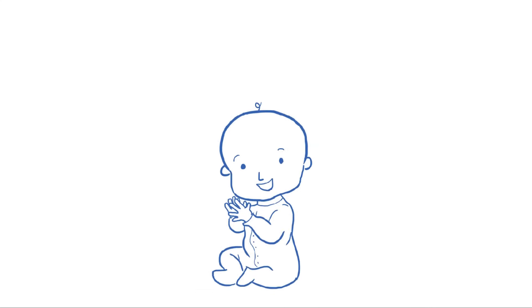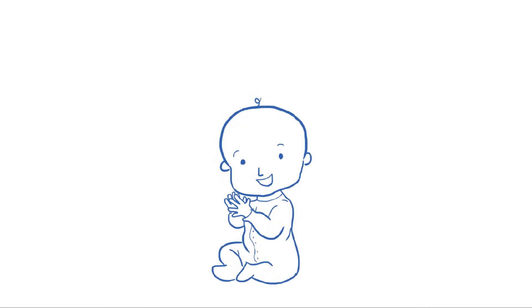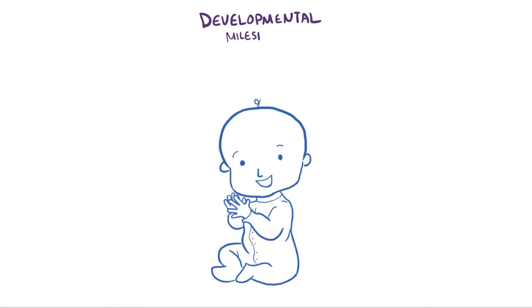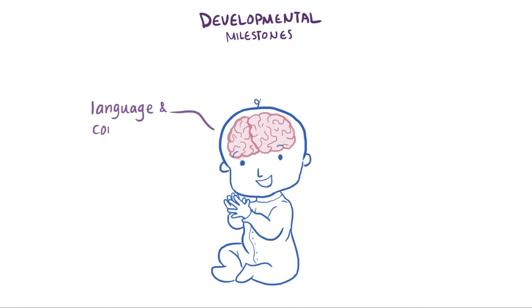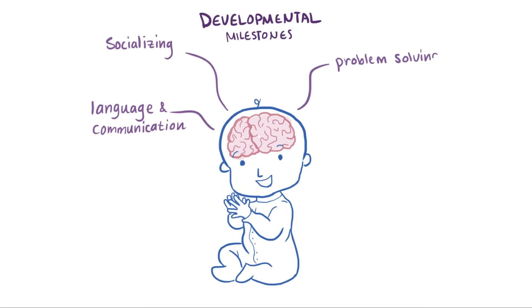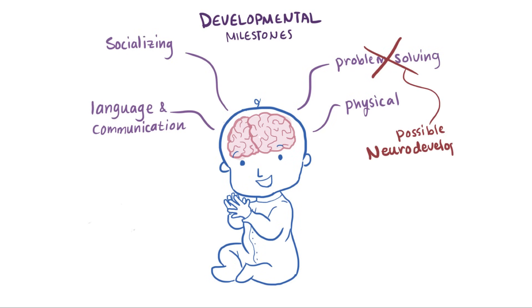Even though everyone develops at slightly different paces, almost everyone hits the same general developmental milestones and learns the same sets of skills at about the same time, more or less. These are things like language and communication, socializing, cognitive skills like problem solving, and physical milestones like walking, crawling, and fine motor skills, all of which progress as the brain develops. If one of these doesn't develop as scheduled, depending on the severity, it may be described as a type of neurodevelopmental disorder — neuro referring to the brain.